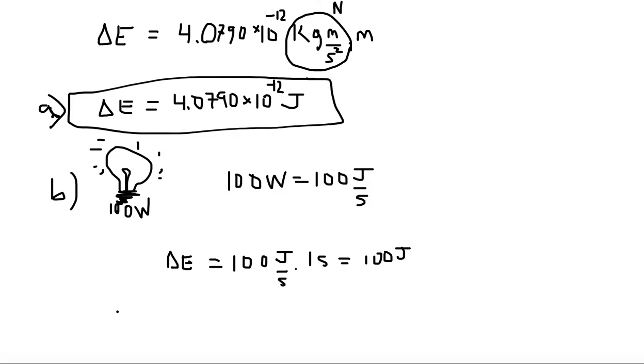So if I compare them, so I'm going to take my light bulb, the energy released by my light bulb, and I'm going to divide it by the energy released by the sun from one hydrogen atom. So we have 100 joules on the top. And we're going to divide this by 4.0790 times 10 to the minus 12 joules.